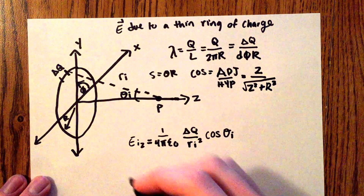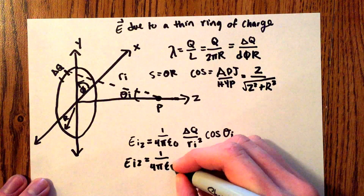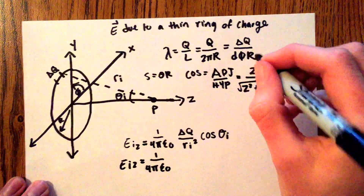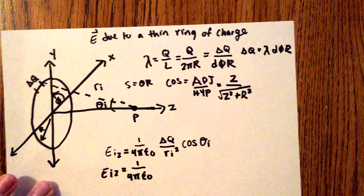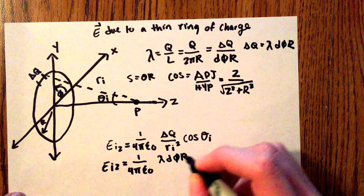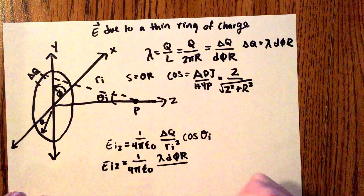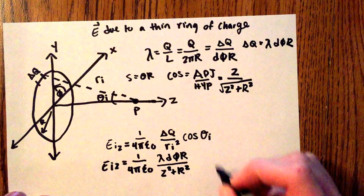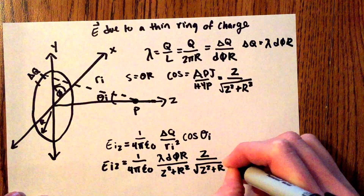Now we can make some substitutions. E_iz is equal to 1 over 4 pi epsilon naught times — substituting for delta q, we have lambda d_phi r — all over r_i squared, which is z squared plus r squared. Then substituting cosine, we have times z over the square root of z squared plus r squared.